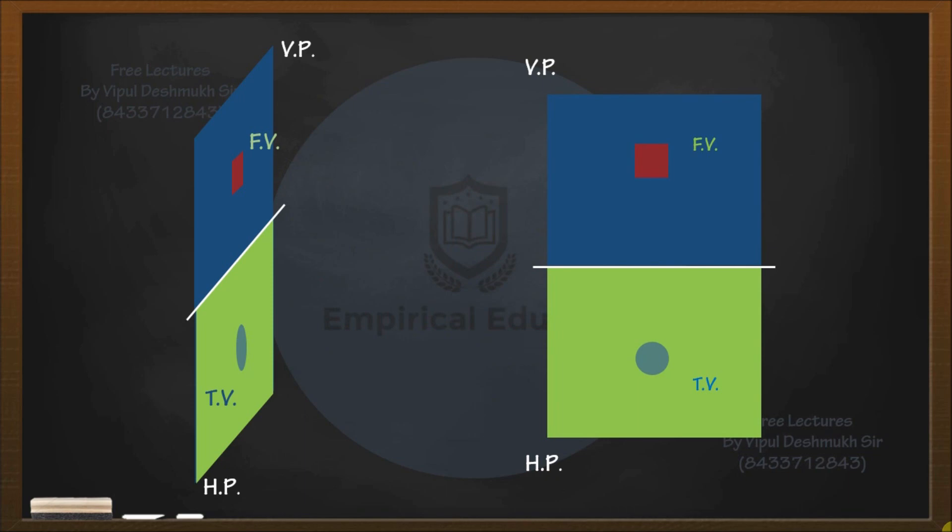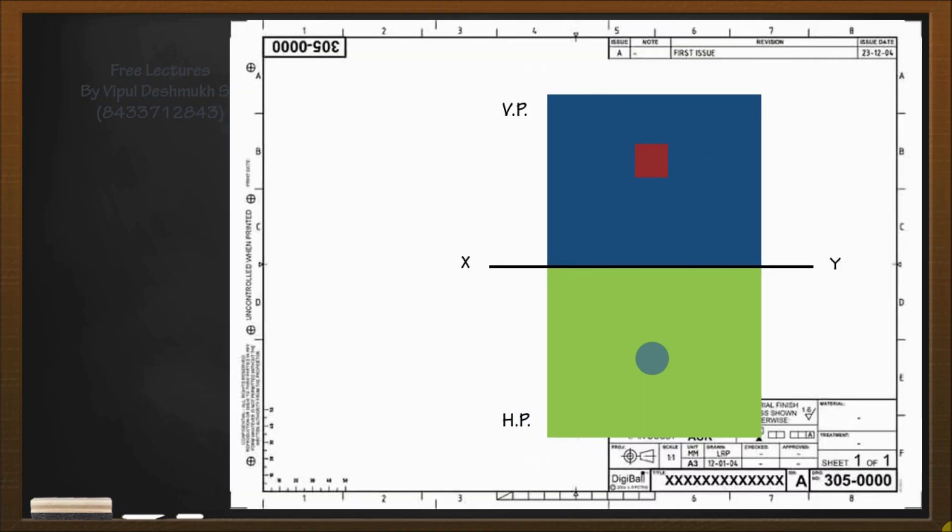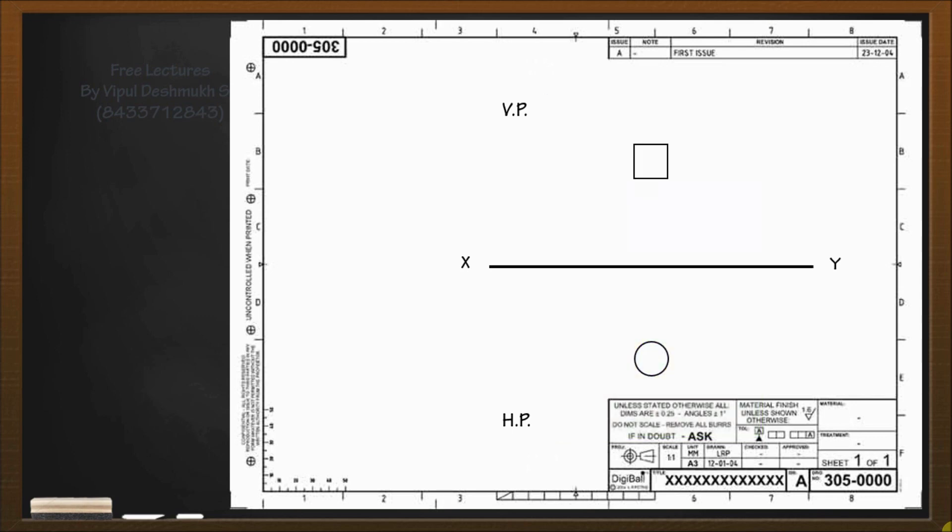If you're observing from this direction, you will see this particular view where the white line is your intersection of VP and HP. If you draw the same thing on paper, you will get the XY line which is the intersection of the planes. Above the XY line it is vertical plane, below XY line it is horizontal plane, and that rectangle is your front view and the circle is your top view. This completes your projection of a cylinder.